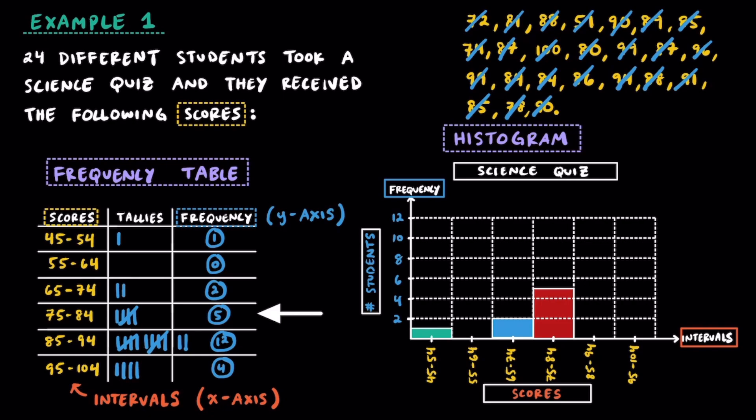There were 5 students that got between a 75 and 84, so draw a bar that goes up to 5 here. There were 12 students that got between an 85 and 94, so draw a bar up to 12.